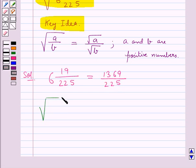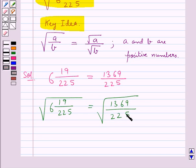The square root of 6 and 19/225 equals the square root of 1369/225. Using the key idea, this can be written as the square root of 1369 over the square root of 225.